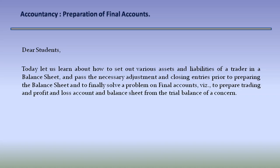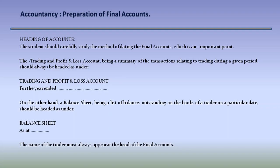First, let us know how to make the headings of the accounts. The student should carefully study the method of dating the financial accounts, which is an important point. The trading and profit and loss account, being a summary of the transactions relating to trading during a given period, should always be headed as: 'Trading and Profit and Loss Account for the year ended [date].' On the other hand, a balance sheet being a list of balances outstanding on a particular date should be headed as 'Balance Sheet as at [date].' The name of the trader must always appear at the head of the final accounts.